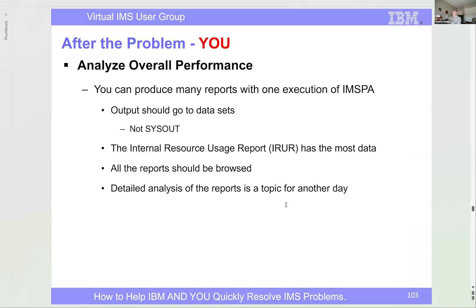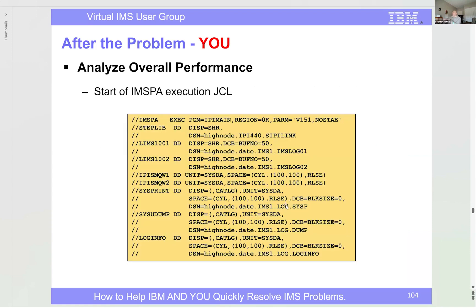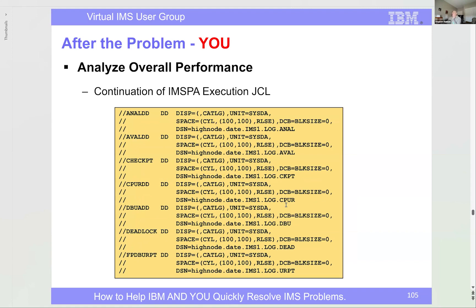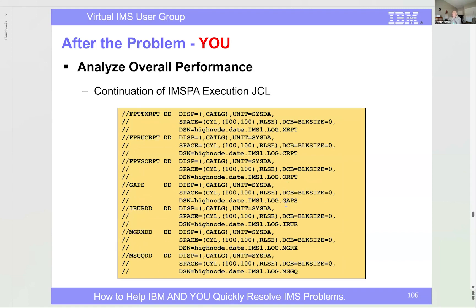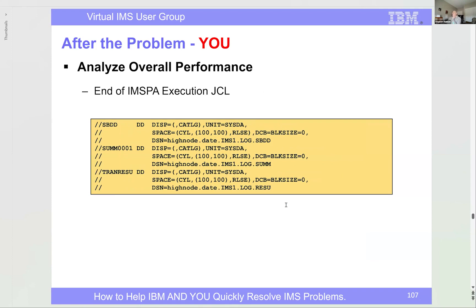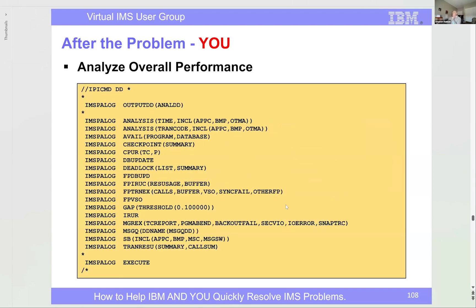For IMS overall performance analysis, produce many reports in one execution of IMS PA. Output should go to datasets, not to SYSOUT. The IRUR report has the most data. Browse all of these reports — detailed analysis is a topic for another day, but they are worth reviewing. All reports go to one DD name per report type.